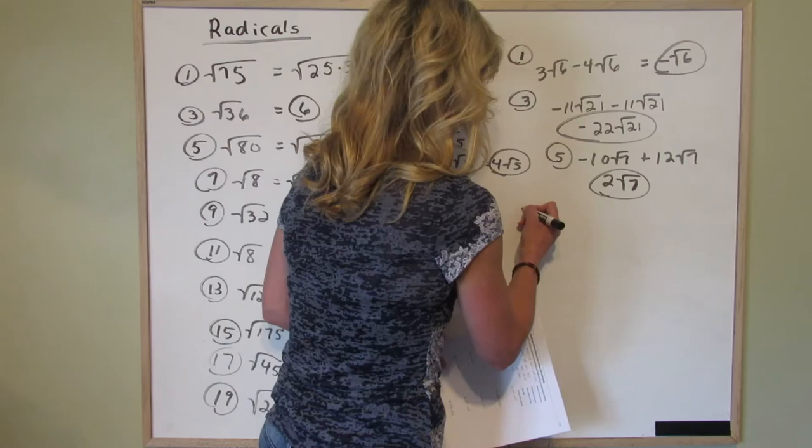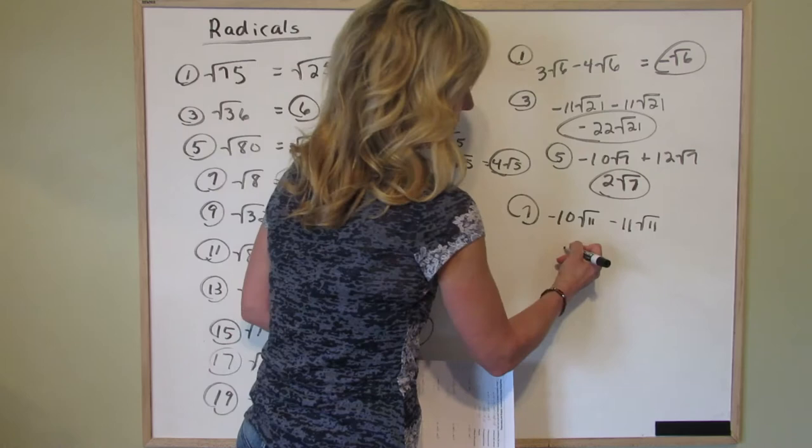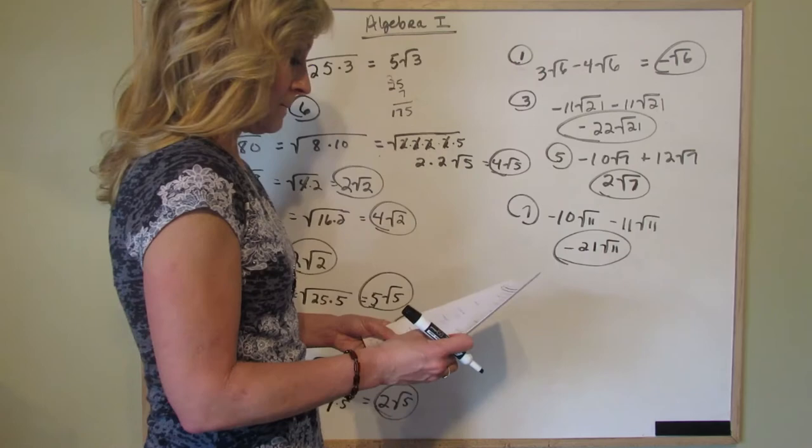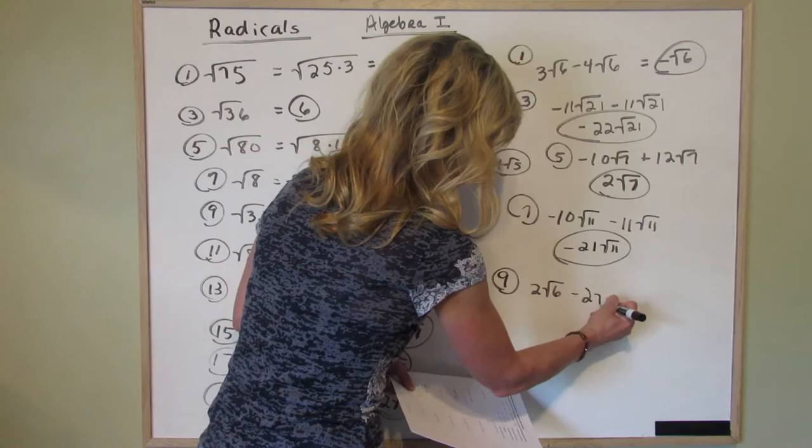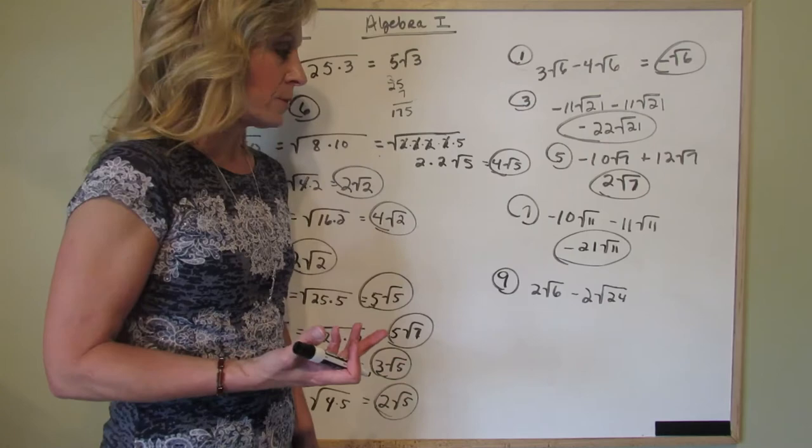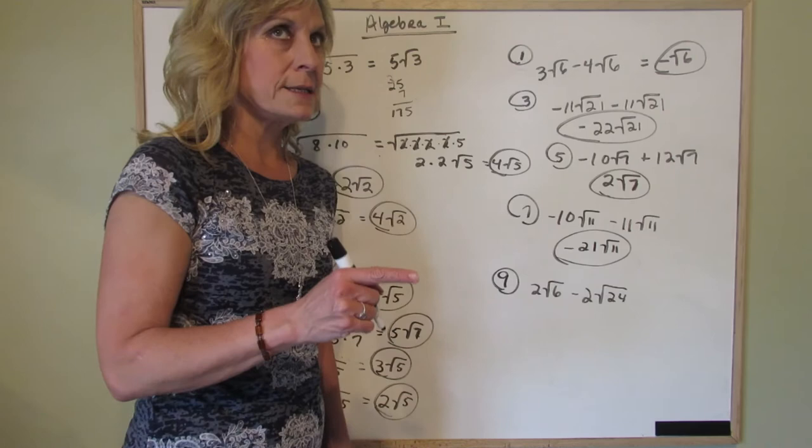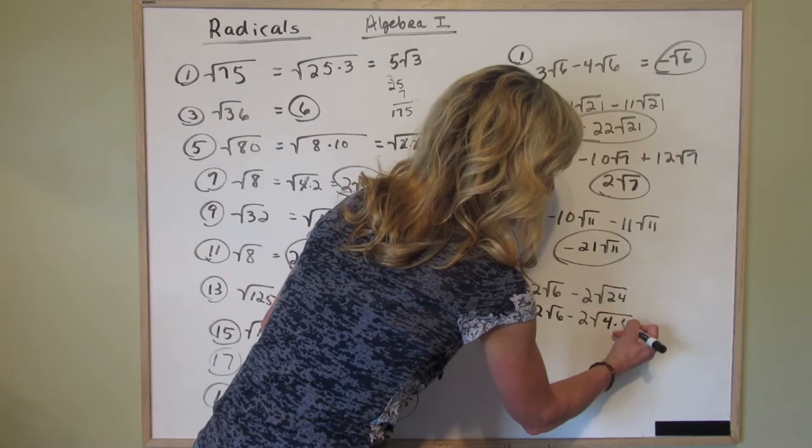Number 7, we have negative 10 square roots of 11 minus 11 square roots of 11. Minus 10 minus 11, that's minus 21, minus 21 square roots of 11. Number 9, it starts to get a little bit different because you have different numbers underneath that square root. Two square roots of 6 minus 2 square roots of 24. So a way to go about this is to think, how can I get the same number under the square root? Is that possible? Well, you see this 6 and you know 24 is 4 times 6. So let's start there. 2 square roots of 6 minus 2 square roots of, instead of 24, I'm going to write 4 times 6.